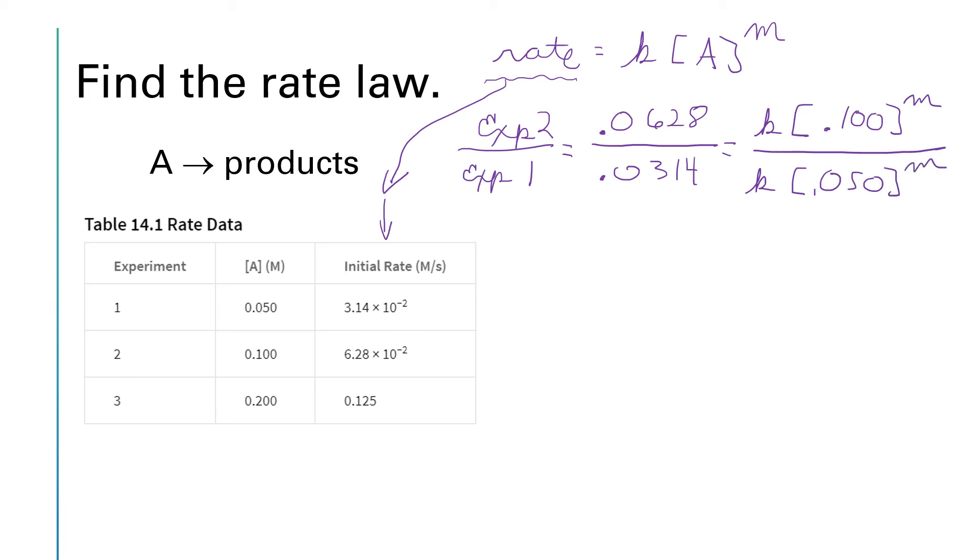All right, right off the bat, I hope you can see that the ks cancel out. k divided by k, those are just gone. We can simplify the rate ratio a little bit because 0.0628 divided by 0.0314, that's a nice two. 0.0628 is two times 0.0314.